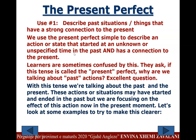Let's look at the more detailed use of the present perfect in English. Use one: describe past situations — things that have a strong connection to the present. We use the present perfect simple to describe an action or state that started at an unknown or unspecific time in the past and has a connection to the present.